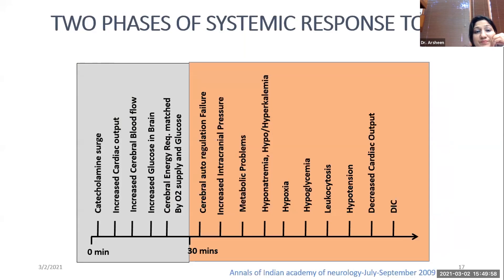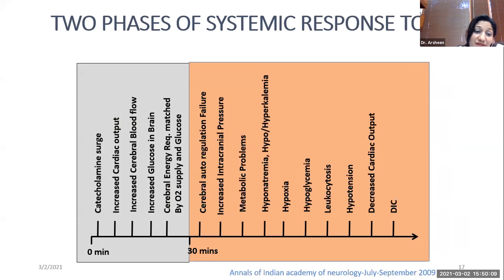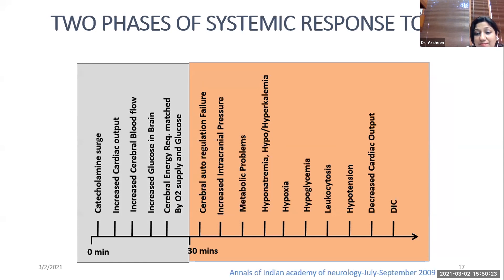There are two phases of clinical manifestation. During early status epilepticus, compensatory mechanisms are predominant, including increased catecholamine surge, increased cardiac output, and increased cerebral blood flow. The transition from early to late status epilepticus occurs after 30 to 40 minutes of continuous seizure activity, and the late phase is marked by failure of compensatory mechanisms.